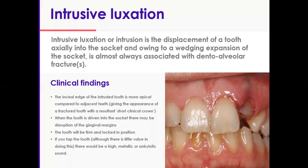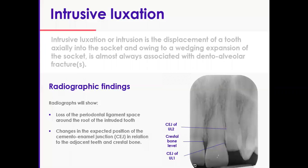Although it's safe to say that if you tap it you hear a high metallic or ankylotic sound, but there's no point in tapping it so please don't try to tap it. Radiographically you will detect the loss of PDL as it gets crushed and the tooth forces itself into a socket that is smaller in diameter than the actual tooth. So you will lose the PDL space altogether and you see changes in the position of the CEJ in relation to the neighboring bone and other anatomical structures.